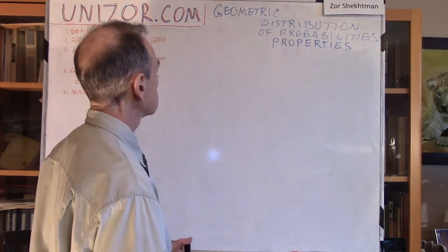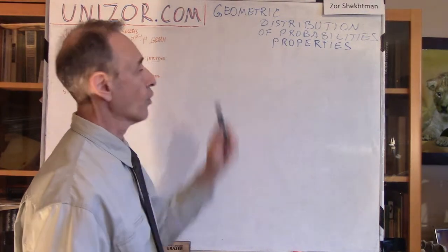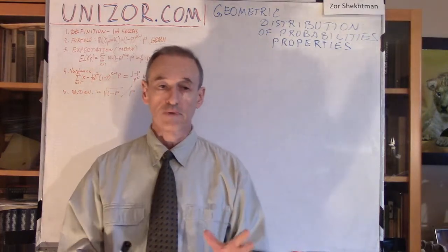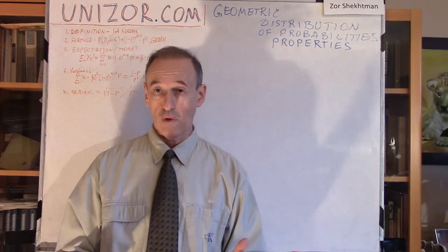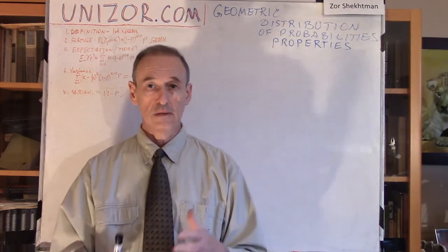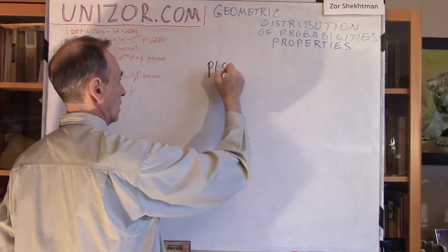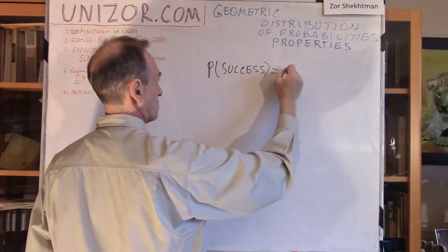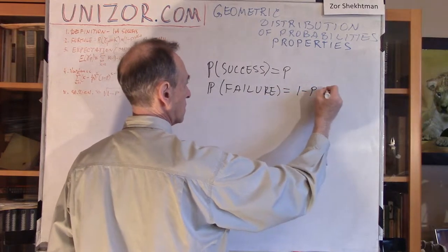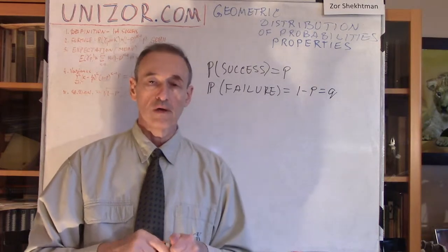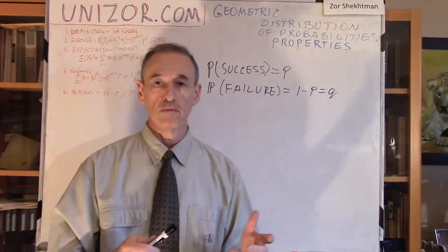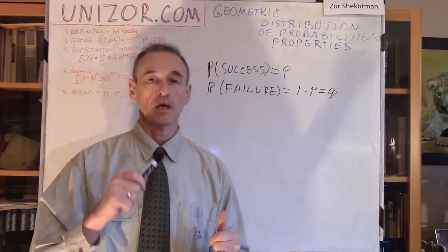First of all, let me start by reminding you a couple of points about geometric distribution from the previous lecture. The definition is as follows: you are making a Bernoulli trial, and then another, and then another. They are independent Bernoulli trials, the result of which is either failure or success, and the probability of success is p.